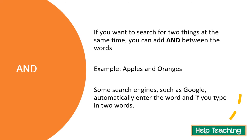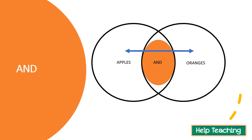So if I want to search for apples and oranges at the same time, I can type in 'apples and oranges.' If I want to search for apples, oranges, bananas, and grapes all at once — and I want all the pages that show up to have all four — I would type 'apples and oranges and bananas and grapes.' Some search engines like Google automatically assume AND between two words you type in, so you'll get results for both apples and oranges, not just one or the other.